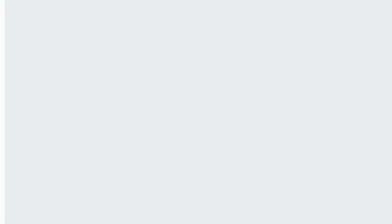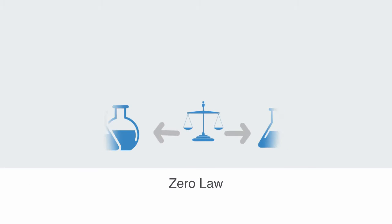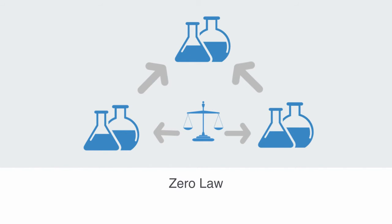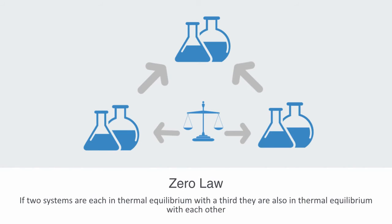This condition of equilibrium is really enshrined in the zero law of thermodynamics, which states that if two systems are each in thermodynamic equilibrium with a third, they are also in thermodynamic equilibrium with each other. The zero law is clearly a statement of equilibrium, and it is this equilibrium through which we define the measurement of temperature as that which ceases to flow between systems in thermal contact.